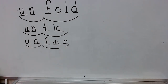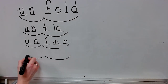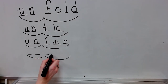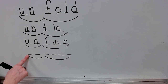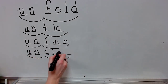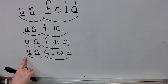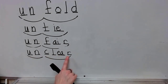The next word is unclear. Syllables: un, clear. Stretch: un, un, base word, stretch clear. Write the spelling for unclear. Check it and correct it. Spell unclear. Yes, unclear.